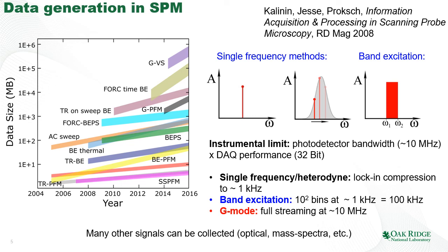On top of this engine, we can build complicated time, voltage, magnitude, and other types of spectroscopies. Combining developments in the SPM engine and SPM spectroscopies, we get a diagram showing the growth of data size in SPM modes over the last 10 years. About 15 years ago, a typical data volume was about a megabyte; now we are progressing all the way to 10 and 100 gigabyte files. We can collect many signals other than cantilever signals, such as optical or mass spectroscopic. The question naturally becomes: what are we going to do with all this data?